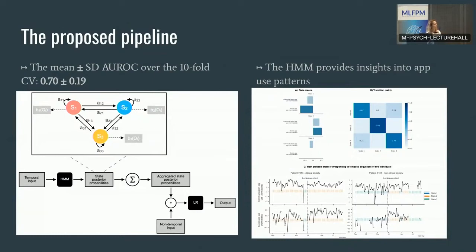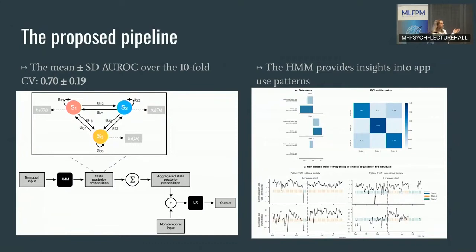An interesting finding was that a three-state HMM captured quite interesting patterns in the data. For example, state three decoded parts of the data where there was low communication app use and average social media usage, while the other states captured more extreme values. When decoding the sequences, we saw that state three was usually linked to those periods where there were no observations for a more consecutive time.